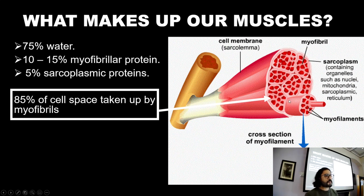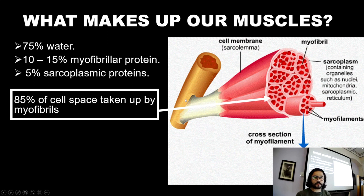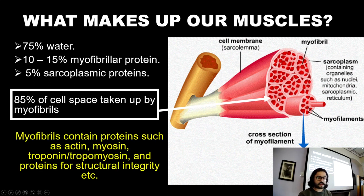When we look at what takes up most of the space, although we've got 10 to 15% myofibrillar protein by mass, it actually takes up the majority of the space within the muscle belly or within the fibre itself. If we were to slice it open, we'd see that 85% of the space is taken up by the myofibrils — those individual strands that contain actin and myosin.